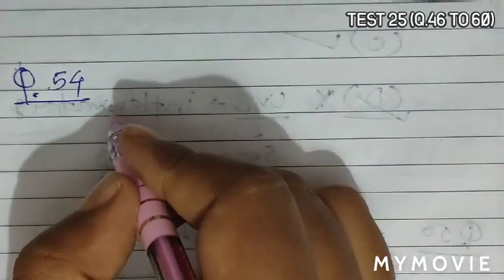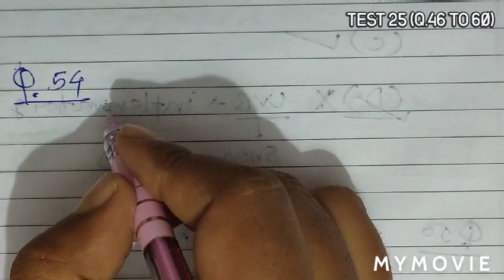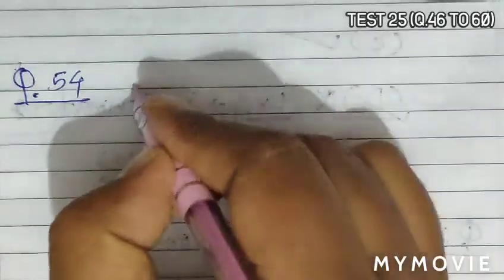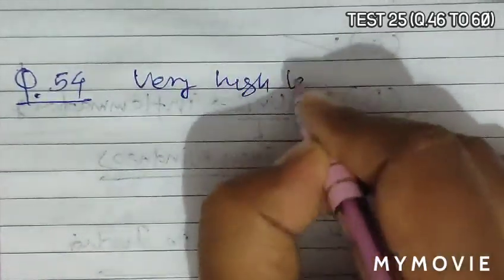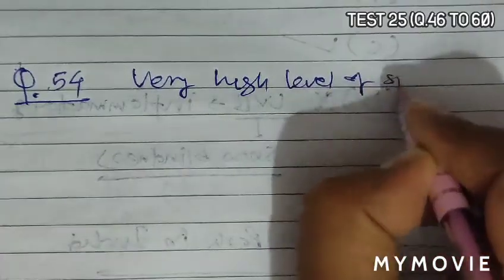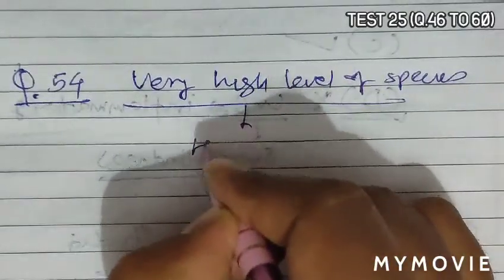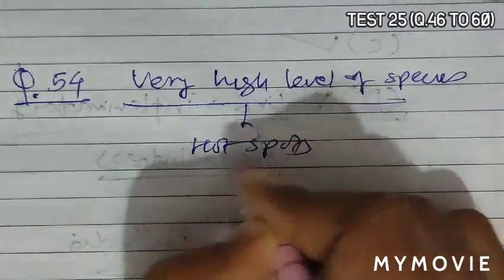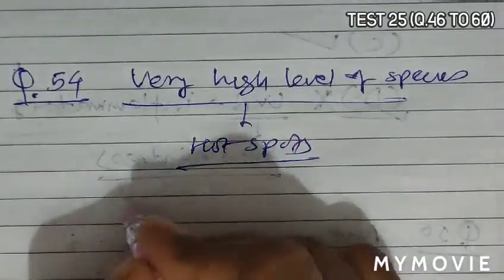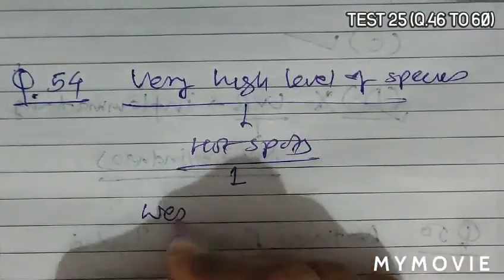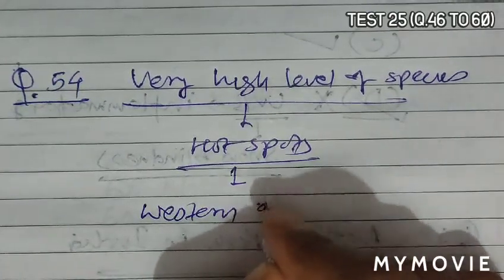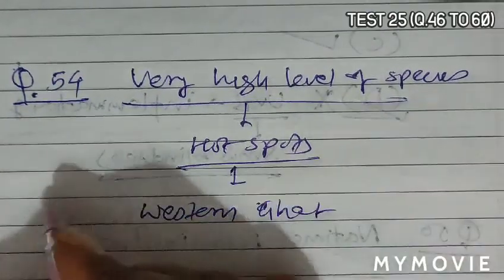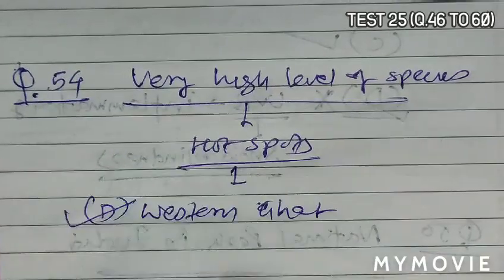Question 54 asks which regions show very high level of species richness. So very high level of species richness is found in hotspots. And according to the given option, in India there is a high species rich area that is the Western Ghats. So option D becomes the correct answer.